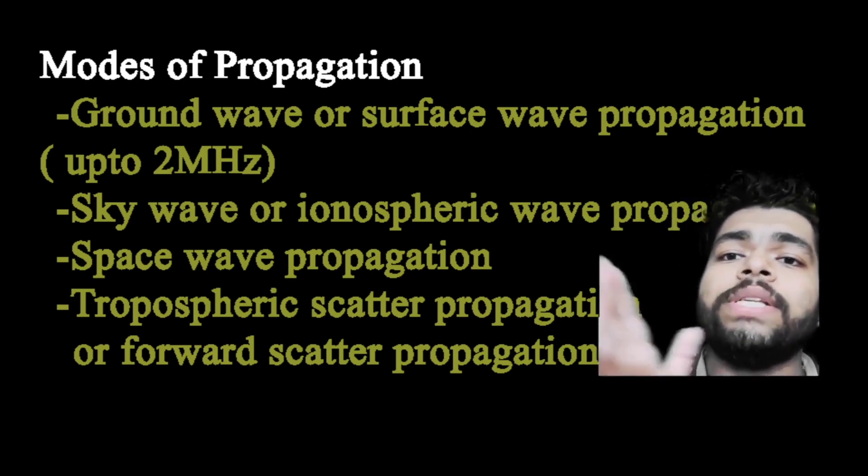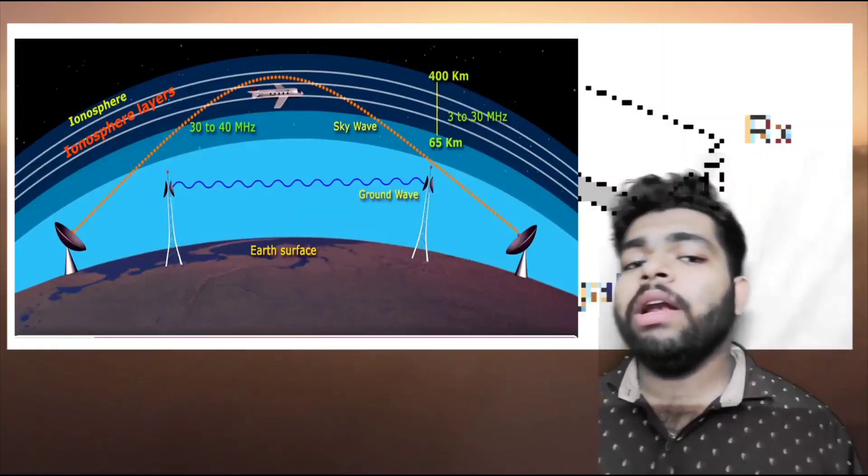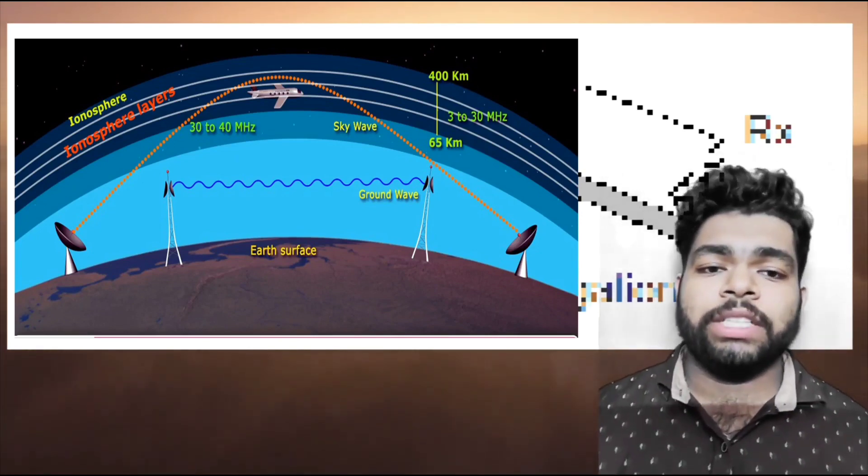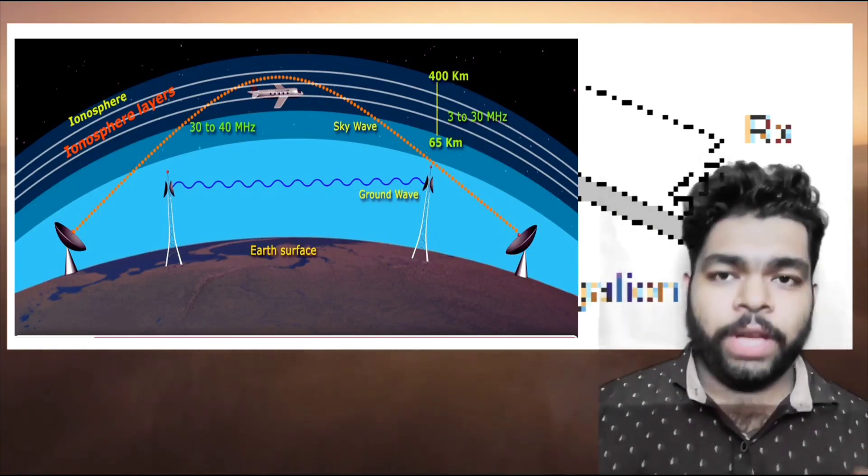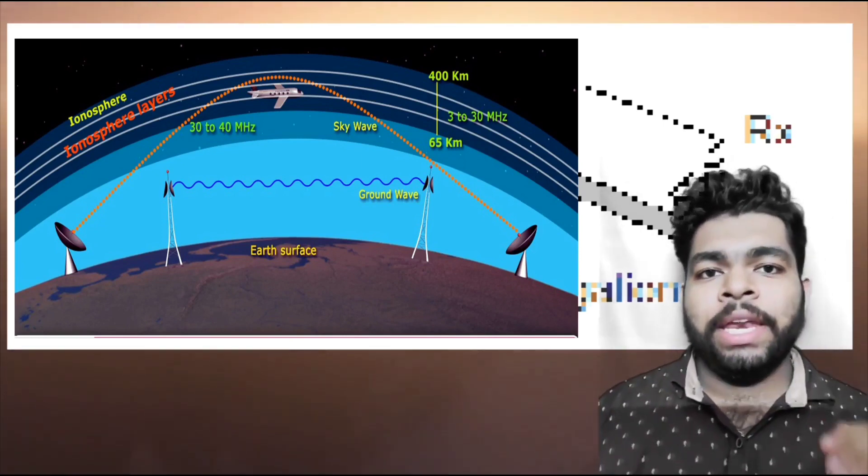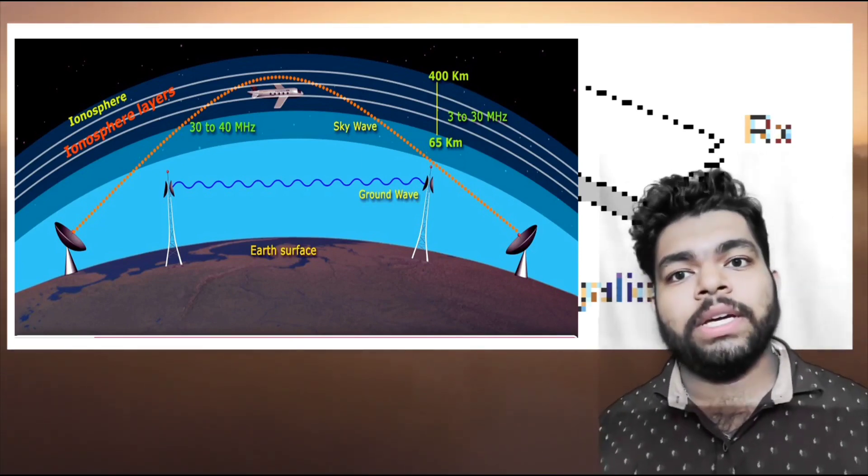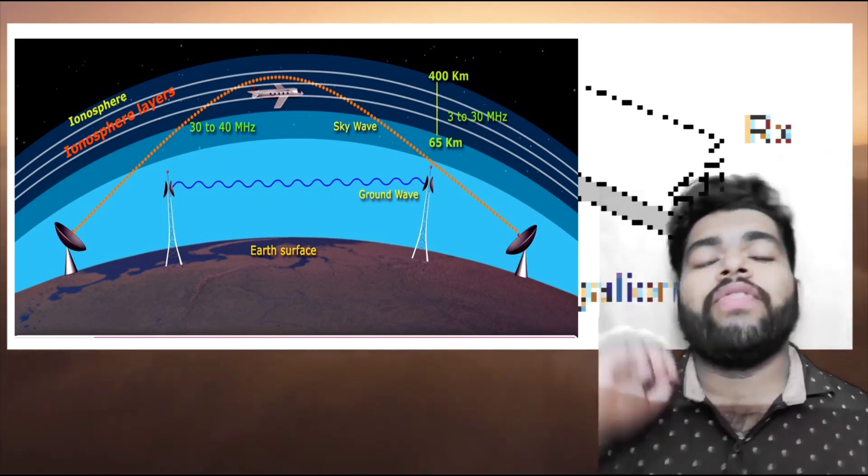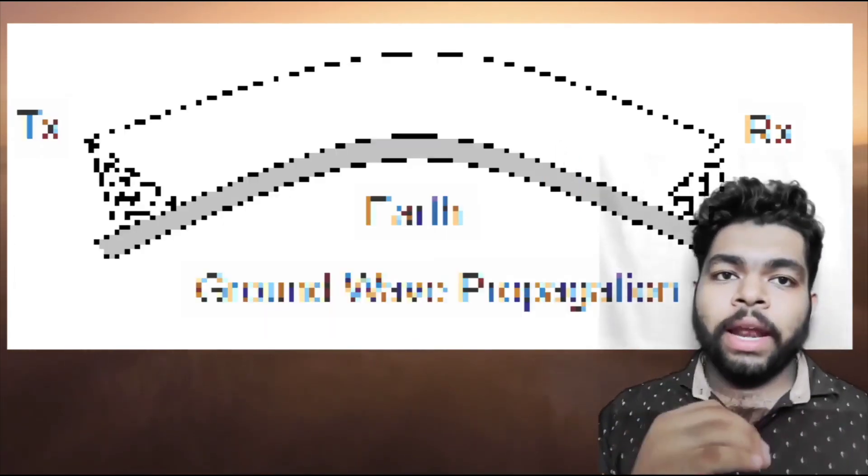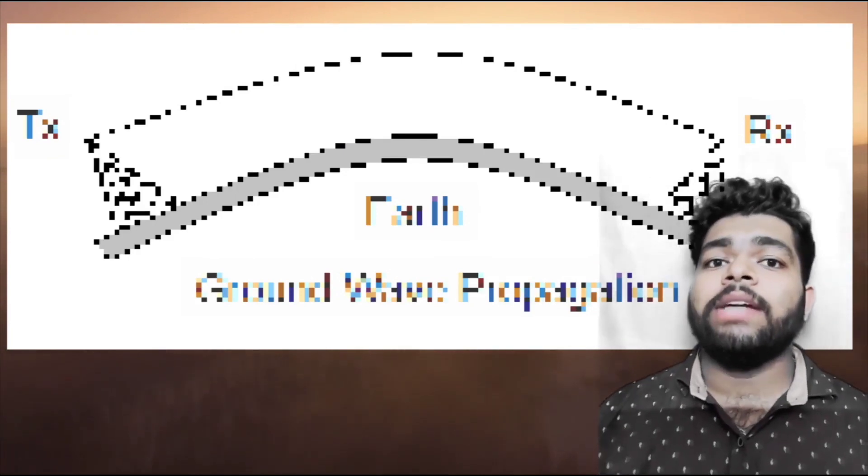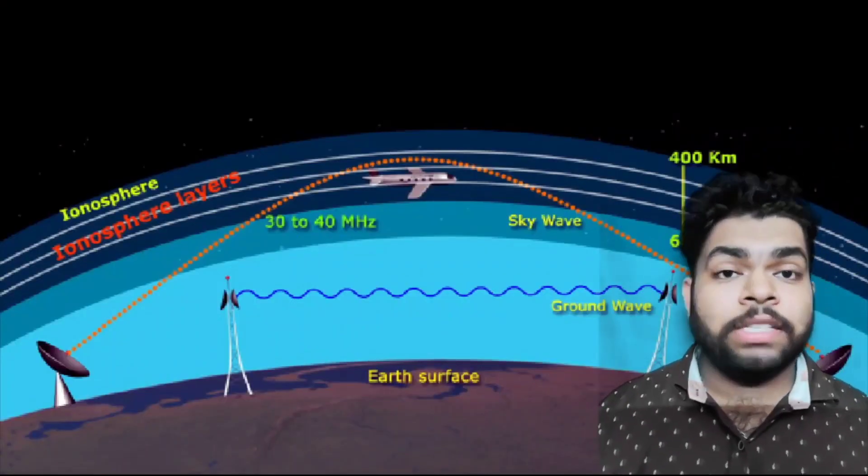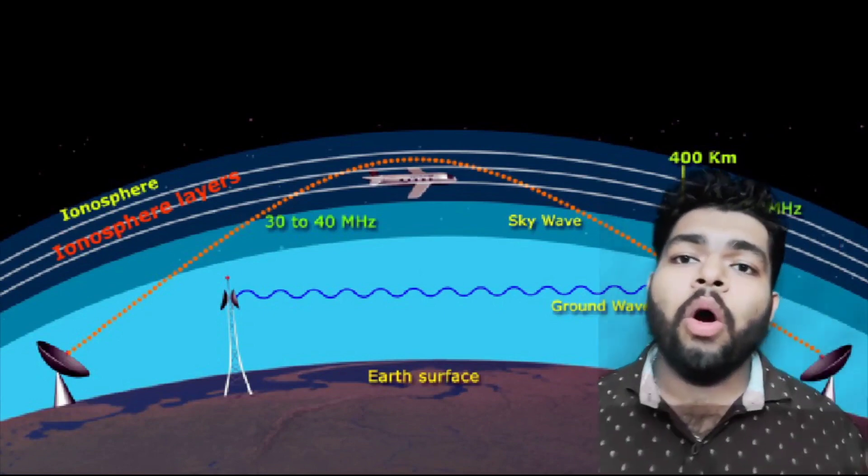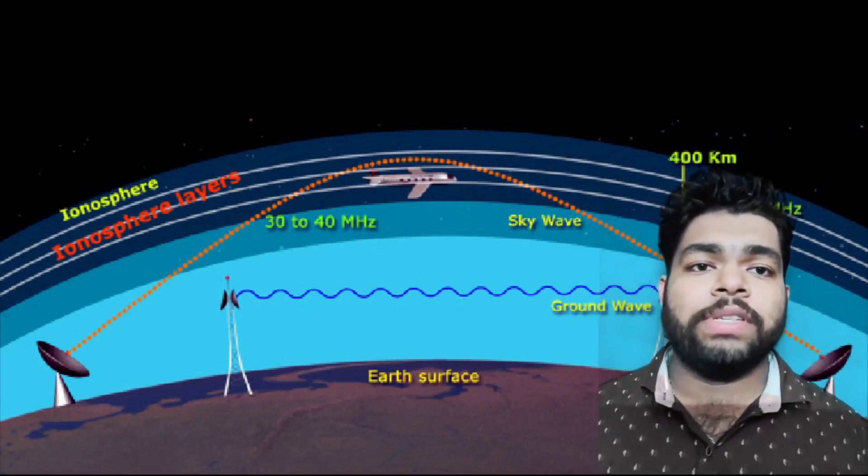Ground wave propagation is a method of radio wave propagation that uses the area between the surface of the earth and the troposphere for transmission. The ground wave can propagate a considerable distance over the earth's surface, particularly in the low frequency and medium frequency portions of the radio spectrum.